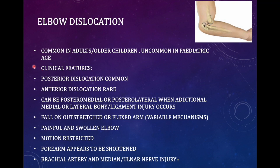Elbow dislocation is more common in older children. The most common variety is posterior dislocation; anterior dislocation is rare. Depending on ligamentous or bony failure, dislocation can be posterior-medial or posterior-lateral. Failure of lateral ligaments results in posteromedial dislocation, while medial ligamentous failure results in posterolateral dislocation. If a bony component fails — for example lateral condyle fracture — then posterolateral dislocation occurs because the bony column determines the direction of dislocation.